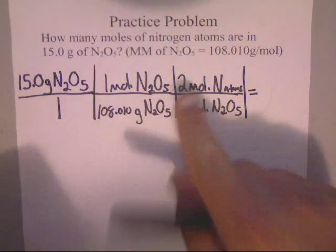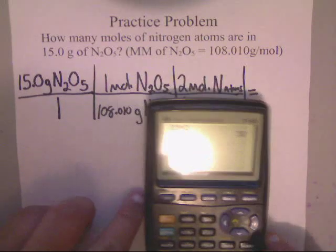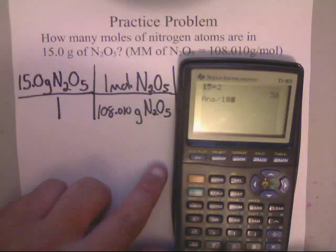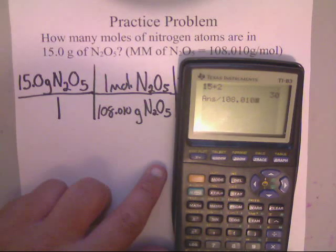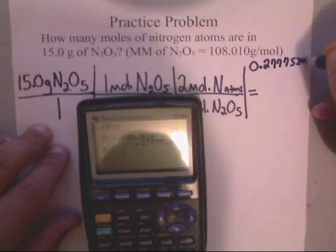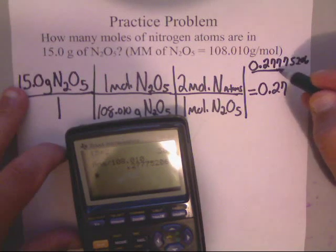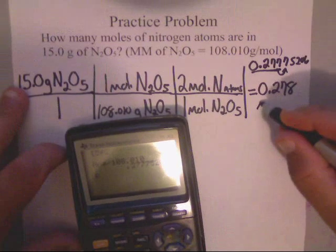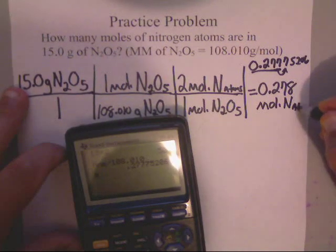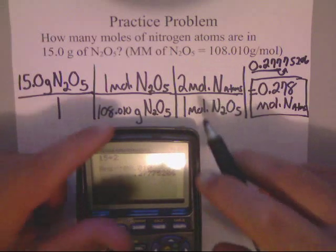Now we need a calculator to finish this problem out. Notice that all you have on the top is 15 times 2. So let's push that into the calculator. 15 times 2 is 30. I'm going to take that 30 and divide it by 108.010. And I get 0.27775206. But I only need three sig figs.